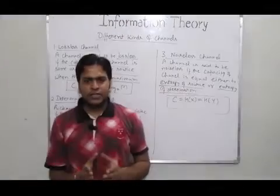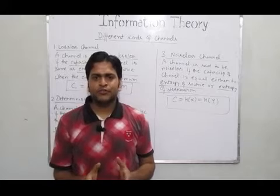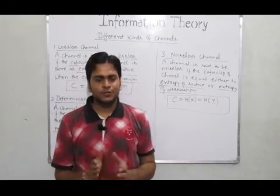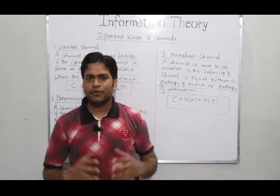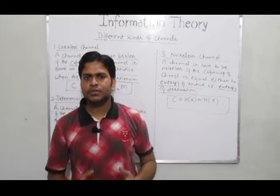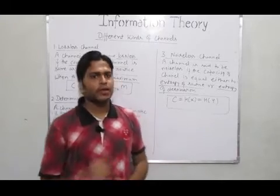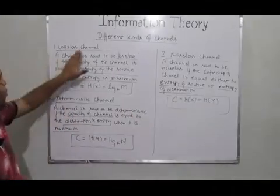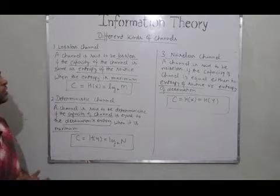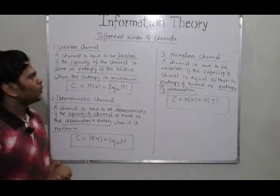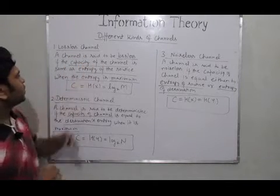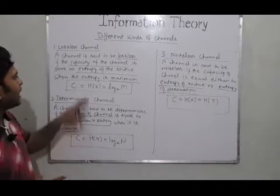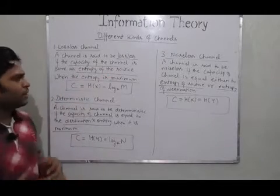Hello friends, welcome to this lecture of information theory. In this lecture I'm going to discuss the topic of various kinds of channels available in information theory. The first is the lossless channel, which is basically the channel where the capacity of the channel is the same as the entropy of the source.